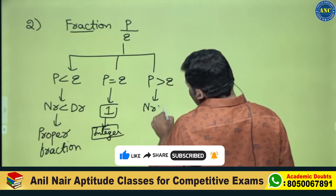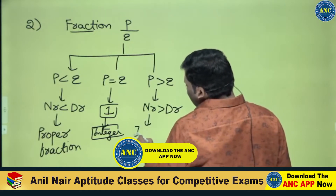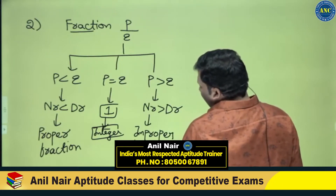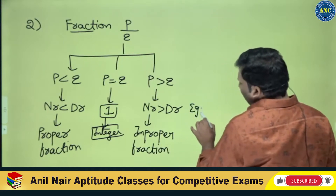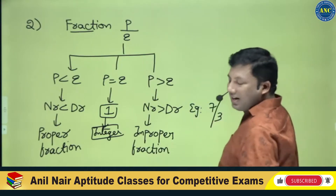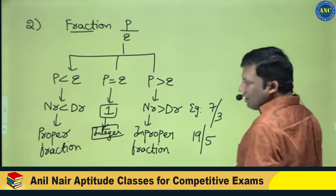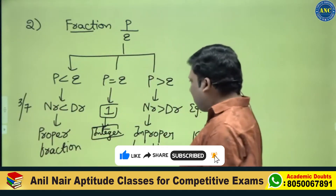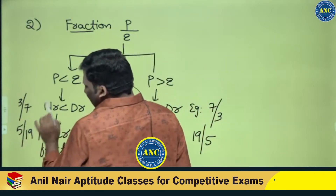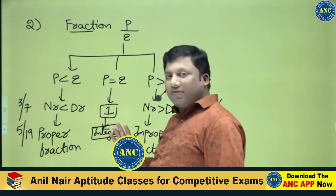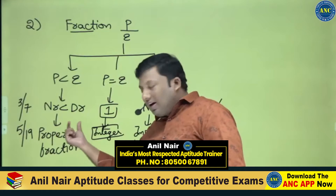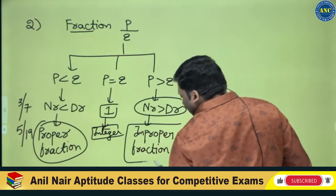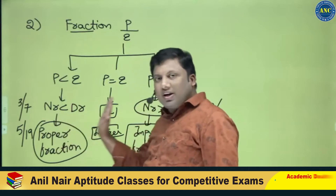If p is greater than q — that is, the numerator is greater than the denominator — I get an improper fraction. To summarize: numerator less than denominator gives a proper fraction; numerator greater than denominator gives an improper fraction.